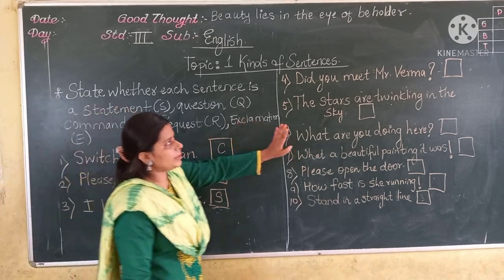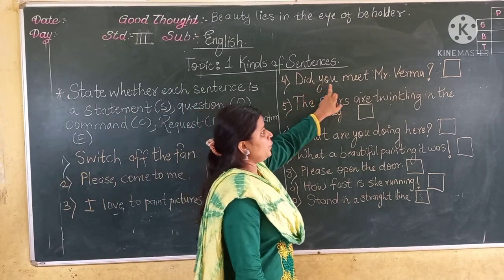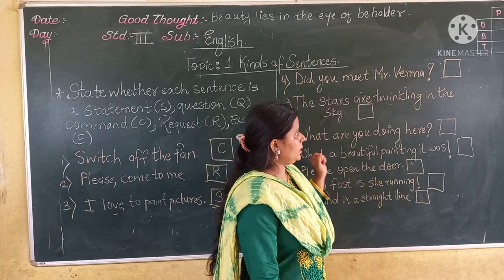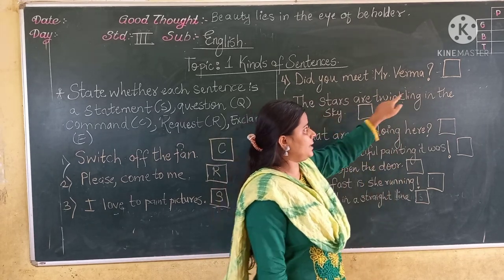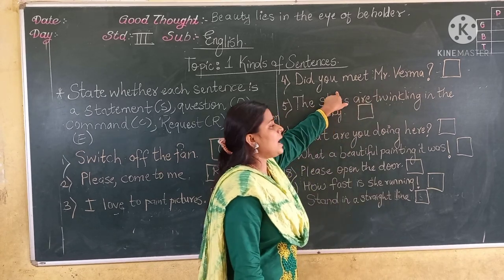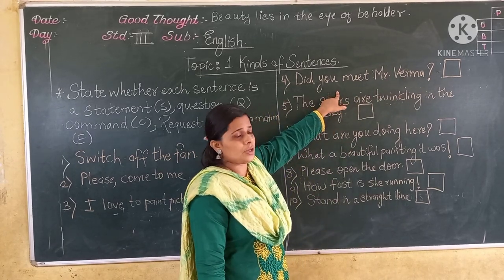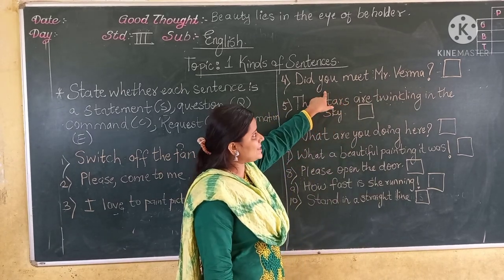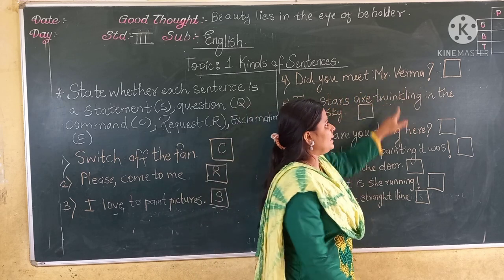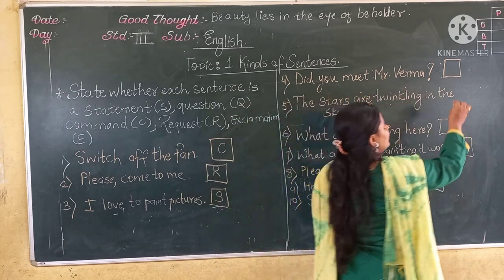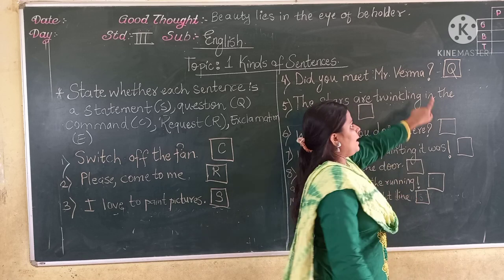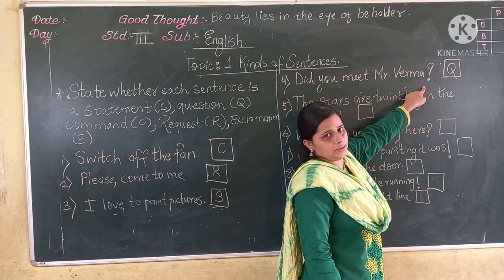Now the fourth sentence: Did you read Mr. Verma? Here it is a question — this sentence asks a question. So when the sentence asks a question, that sentence is Q — question. It ends with a question mark.